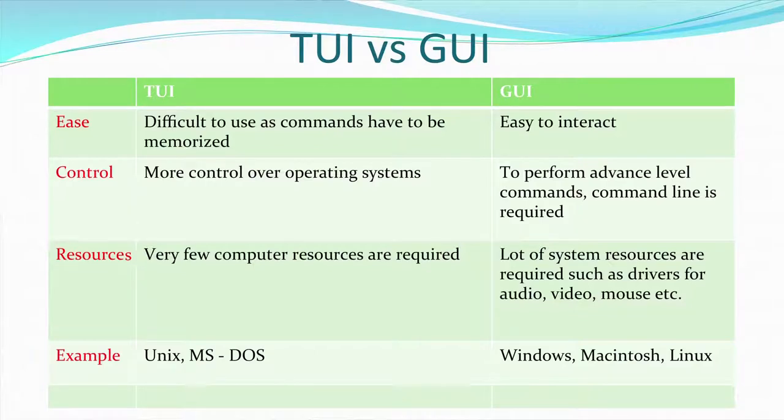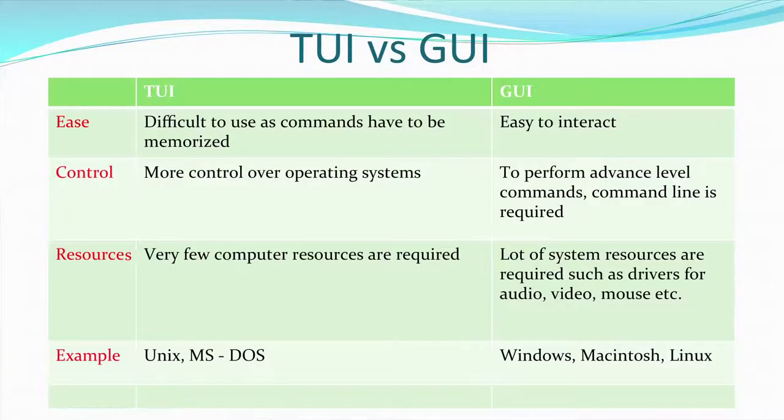A text user interface requires very few resources because input is only through the keyboard, whereas a graphical user interface requires more resources — keyboard for text input, mouse for clicking, and options for scanning, recording images, audio, or video. The examples given are Unix and DOS for text user interface, and Windows, Macintosh, and Linux as examples of a graphical user interface.